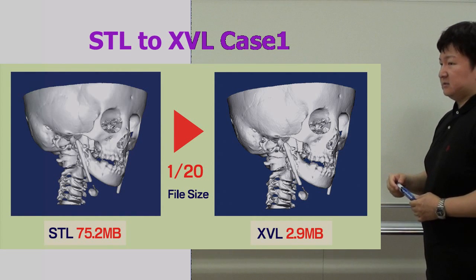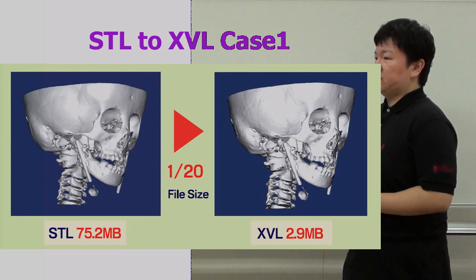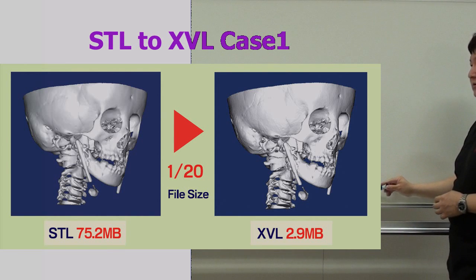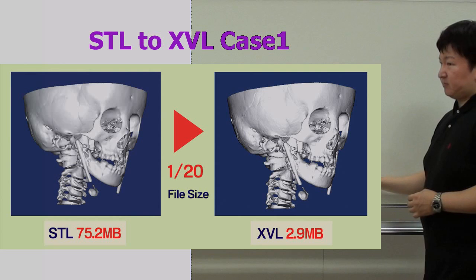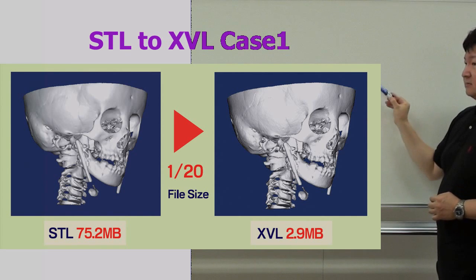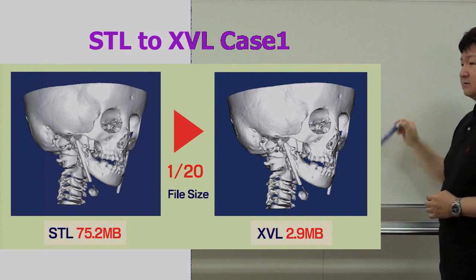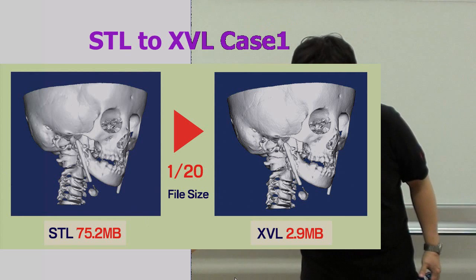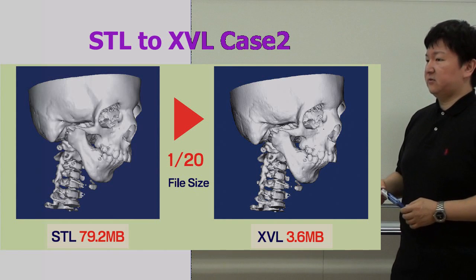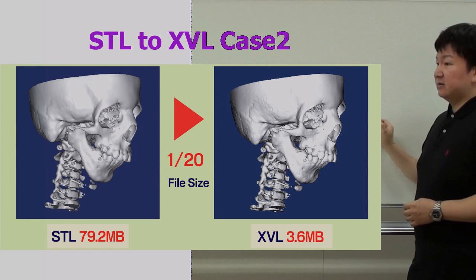The file size of the Excel file using the original method is very large — 75 megabytes. But XBL-5 is only 2.9 megabytes. The right side is very small, but as you can see, the quality of the 3D model is the same as STL. The XBL file is 3.6 megabytes.